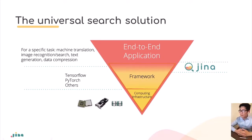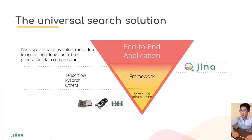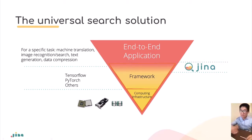This graph explains where we position GINA. The AI industry is like a reverse pyramid: at the very bottom you have computing infrastructure — CPU, GPU, FPGA, cloud services. On top of that are frameworks like TensorFlow, PyTorch, MXNet. GINA sits one layer above those deep learning frameworks, embracing all kinds of frameworks, and provides infrastructure specifically for search applications such as machine translation, image recognition, search, text generation, and data compression.